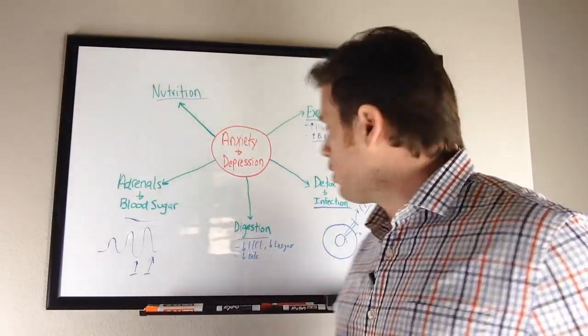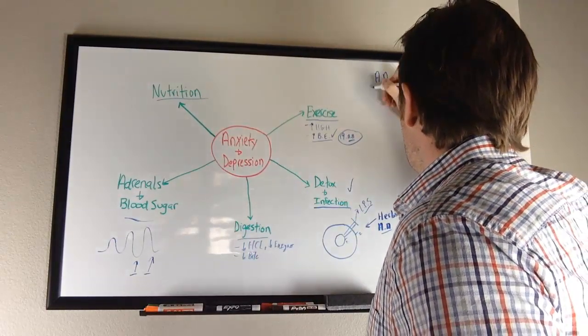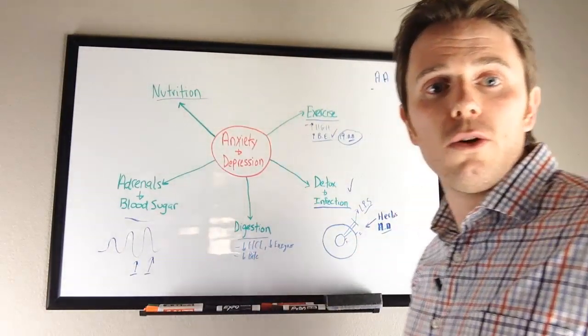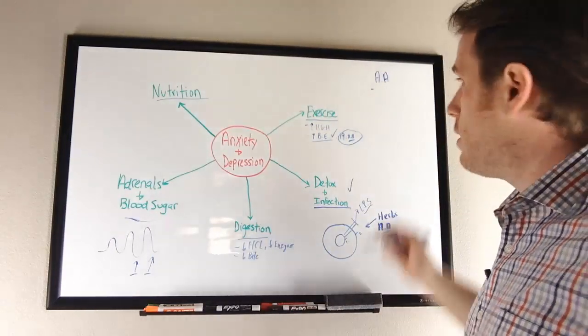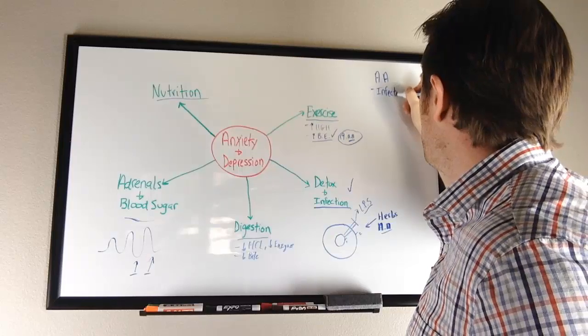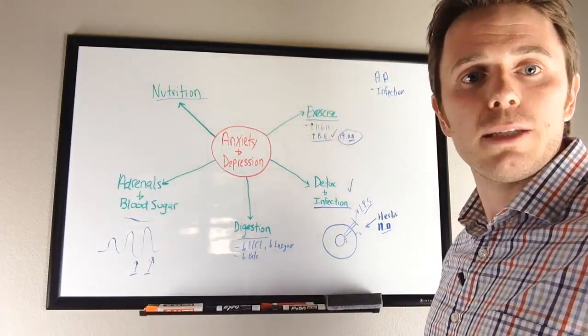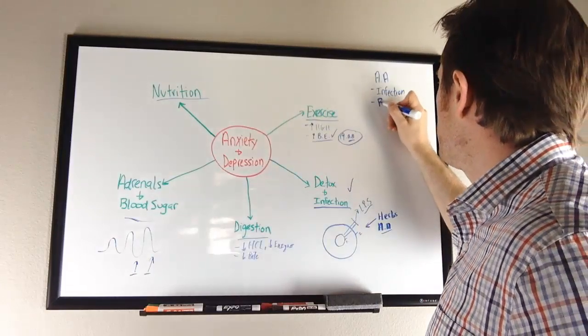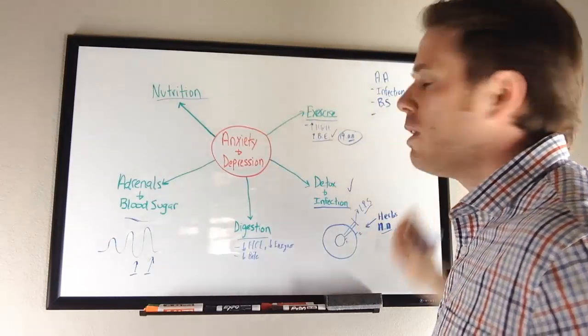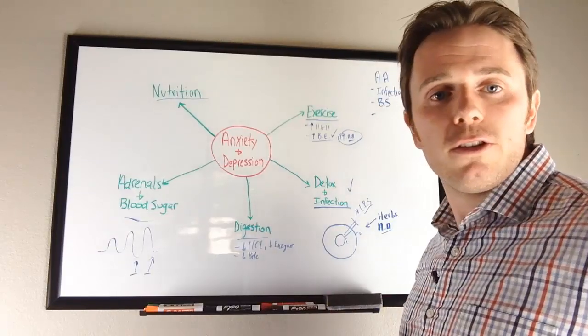Now looking at what you can do—action items over here. One of the first things that we can do is address the infection. Next thing is stabilize the blood sugar, so blood sugar, do some of the exercise things that we already talked about.